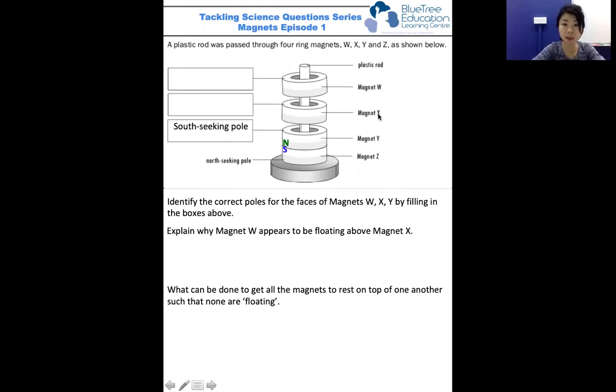Now, between magnet X and magnet Y, we see a gap, which means that they are repelling one another. And since like poles of magnets repel one another, we can very safely identify this portion of magnet X as the south pole.